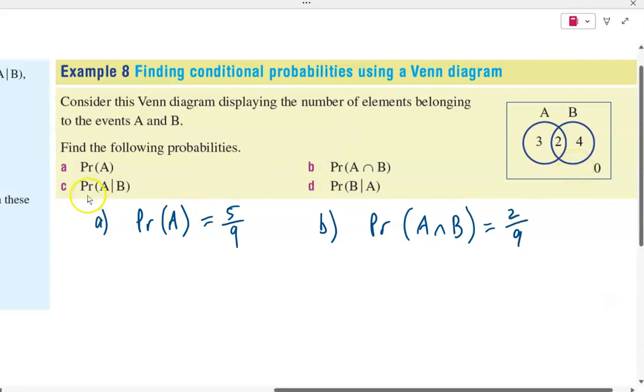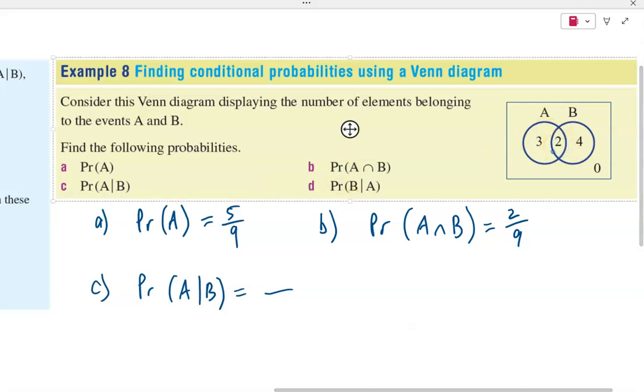Now we're looking at conditional probability. So what is the probability of event A happening given event B has already occurred? Or what is the probability of A given B? So for C, we're looking at the probability of A given B. Now remember, the value at the top of our fraction is the number inside the intersection,